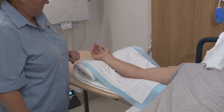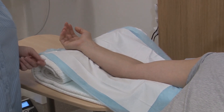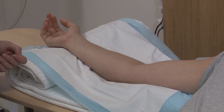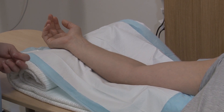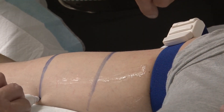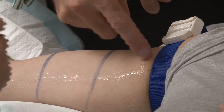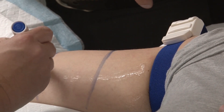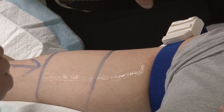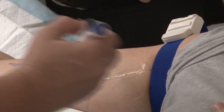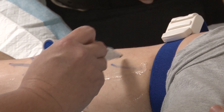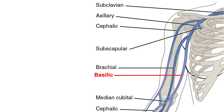Ultrasound assessment of the upper arm vessels prior to the procedure will allow for optimal vein selection. Ultrasound should be performed the full length of the upper arm. The ideal insertion site is the middle third of the upper arm, away from points of flexion such as the cubital fossa, or areas of moisture and high bacterial growth such as the axilla. The most frequently chosen vessel for PICC insertion is the basilic vein due to its typically large diameter, direct pathway to the superior vena cava, and being more distant from neighbouring arteries and nerves.